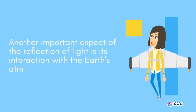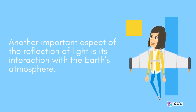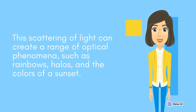Another important aspect of the reflection of light is its interaction with the Earth's atmosphere. As light enters the Earth's atmosphere, it is scattered in different directions by air molecules and other particles. This scattering of light can create a range of optical phenomena, such as rainbows, halos, and the colors of a sunset.